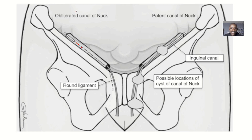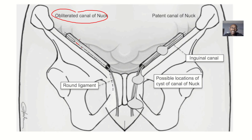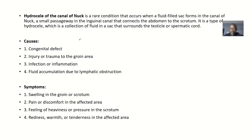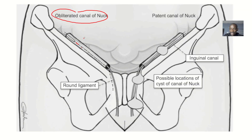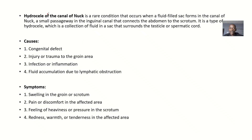Looking at this right now, you can see the dot dot dot here — that's the obliterated canal of Nuck. A hydrocele is basically an accumulation of fluid, so there could be accumulation of fluid in this area, and that can lead to what is known as the hydrocele of the canal of Nuck. I first came across this concept when checking for differential diagnoses for femoral hernia.